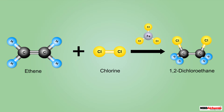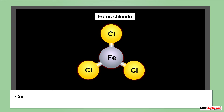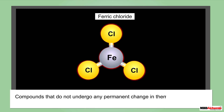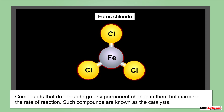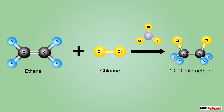These addition reactions of carbon compounds take place in the presence of some other compounds, like ferric chloride in the case of the addition reaction of ethene and chlorine. Such compounds do not undergo any permanent change themselves but increase the rate of reaction. These compounds are known as catalysts.